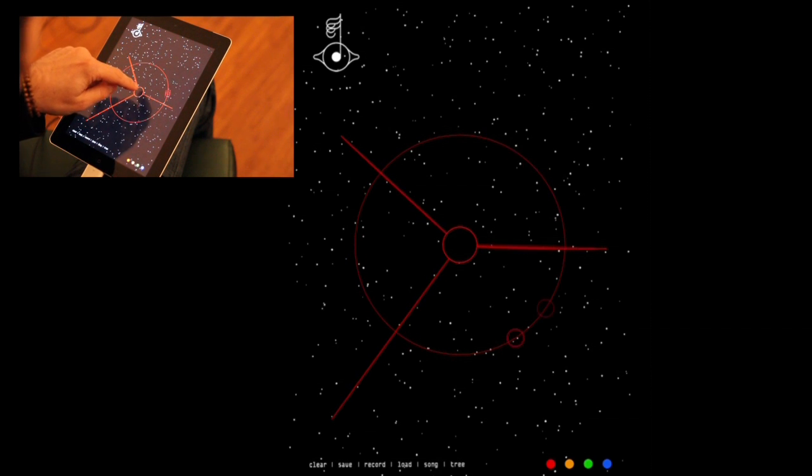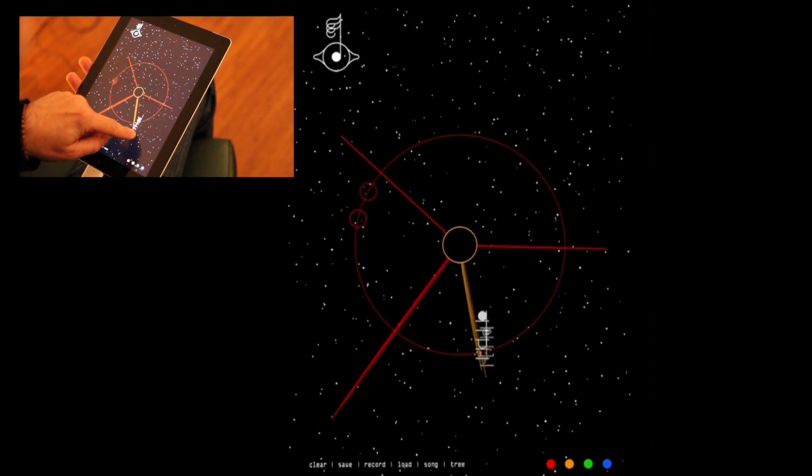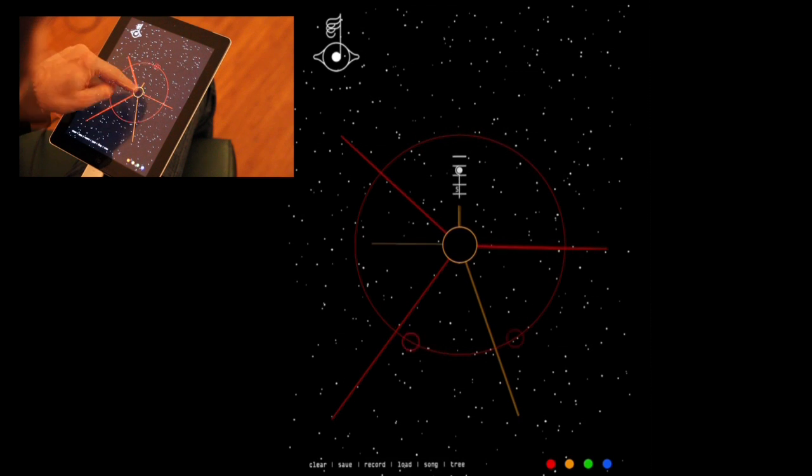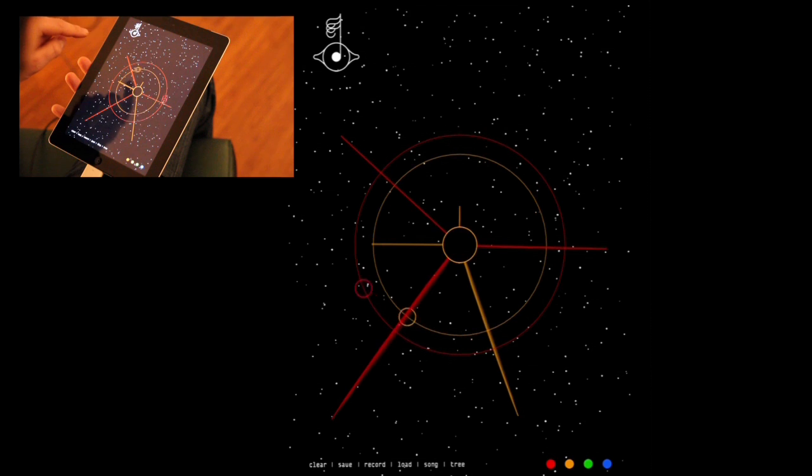If you tap the center, you can create a different color and that's a second melody line. We can drag out of that, and once again we drag a circle to play that.